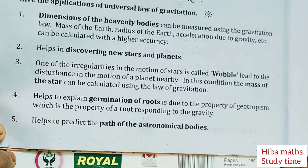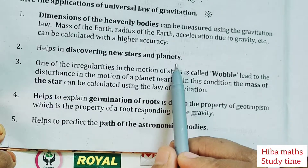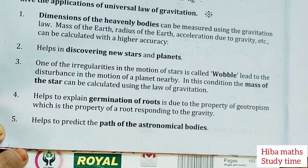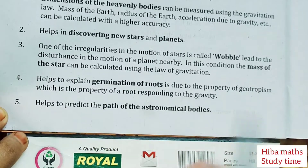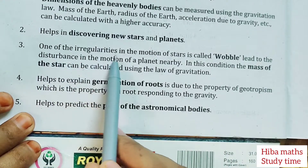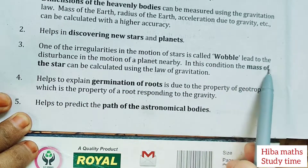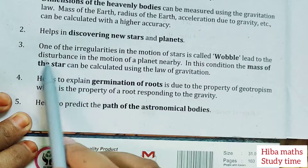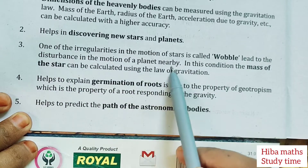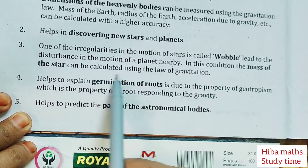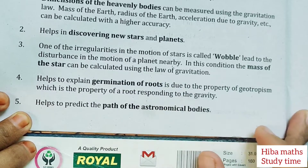It helps in discovering new stars and planets. One of the irregularities in the motion of stars leads to disturbance in the motion of the nearby planet. In this condition, the mass of the star can be calculated using the law of gravitation.